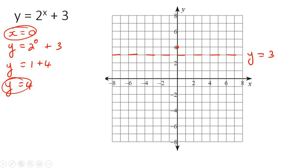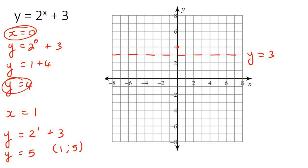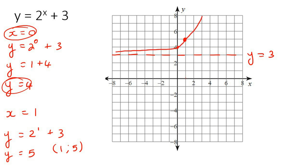The next thing is to find one other point. For example, let x equal 1. Go plug it into that equation, and y would be 5. So when x is 1, y is 5 — put a little dot, and there we go. Now we know the exact shape, because this is an asymptote and the graph always goes very close to it. So the graph is definitely going to do something like that. Label this for your teacher, and there we go.